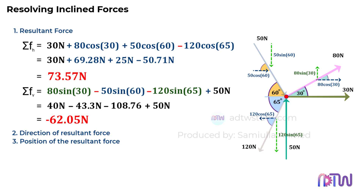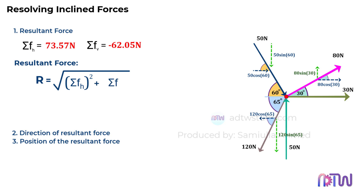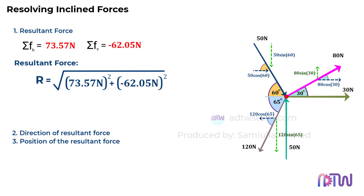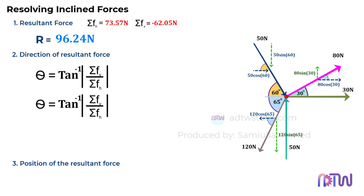With the summation of horizontal and vertical forces, we can find the resultant force. The resultant force R equals the square root of (summation of horizontal forces squared plus summation of vertical forces squared). Substituting the values: square root of (73.57 squared plus negative 62.05 squared), which gives a resultant force of 96.24 newtons. Next, we find the direction. The angle theta is given by the tan inverse of the absolute value of the summation of vertical forces divided by the summation of horizontal forces, which is tan inverse of 62.05 divided by 73.57, giving theta equal to 40.14 degrees.